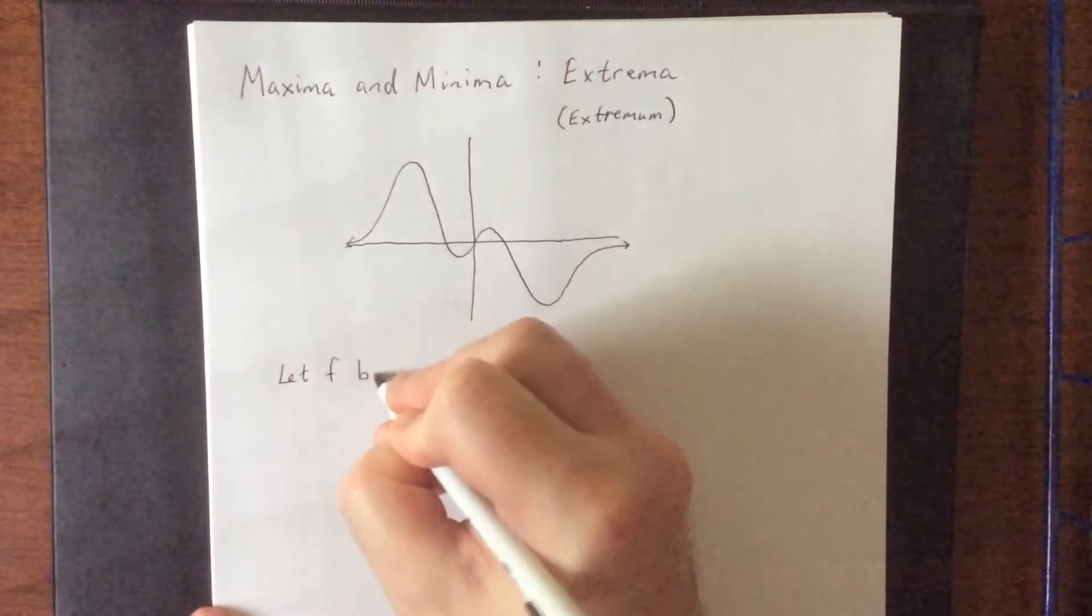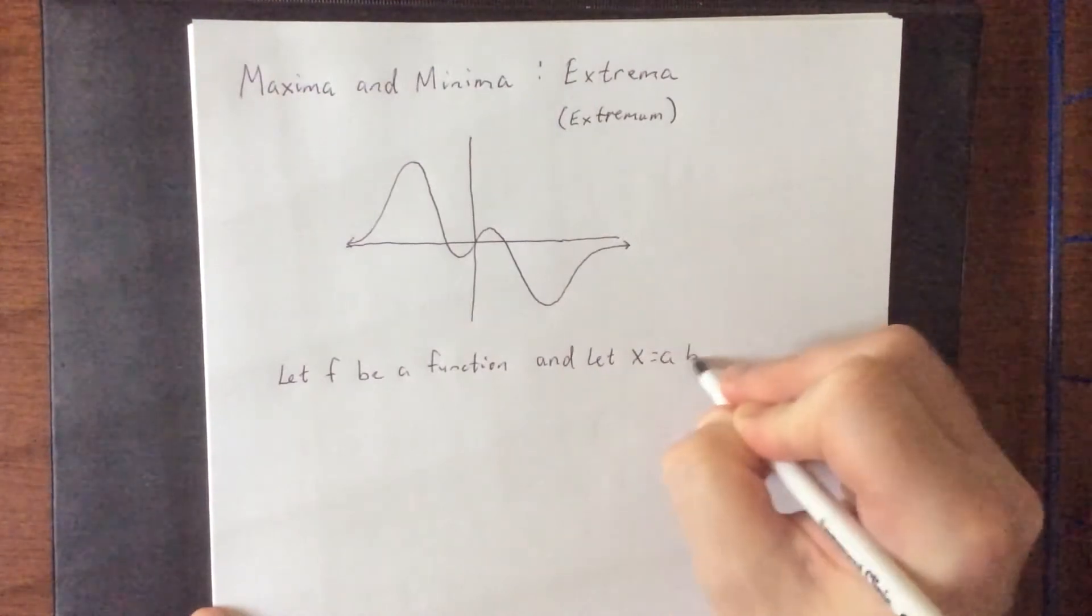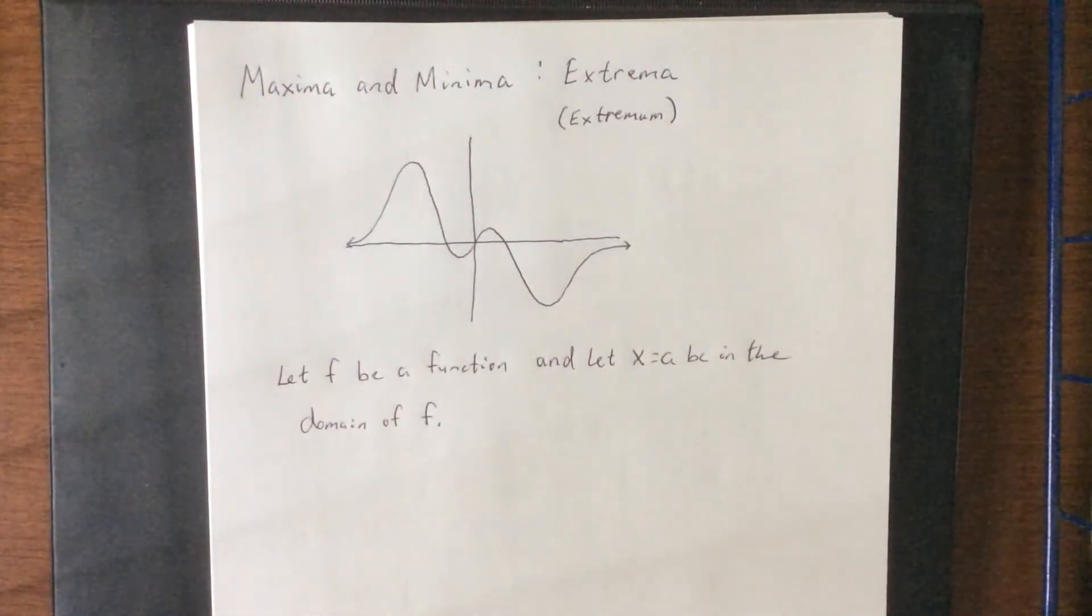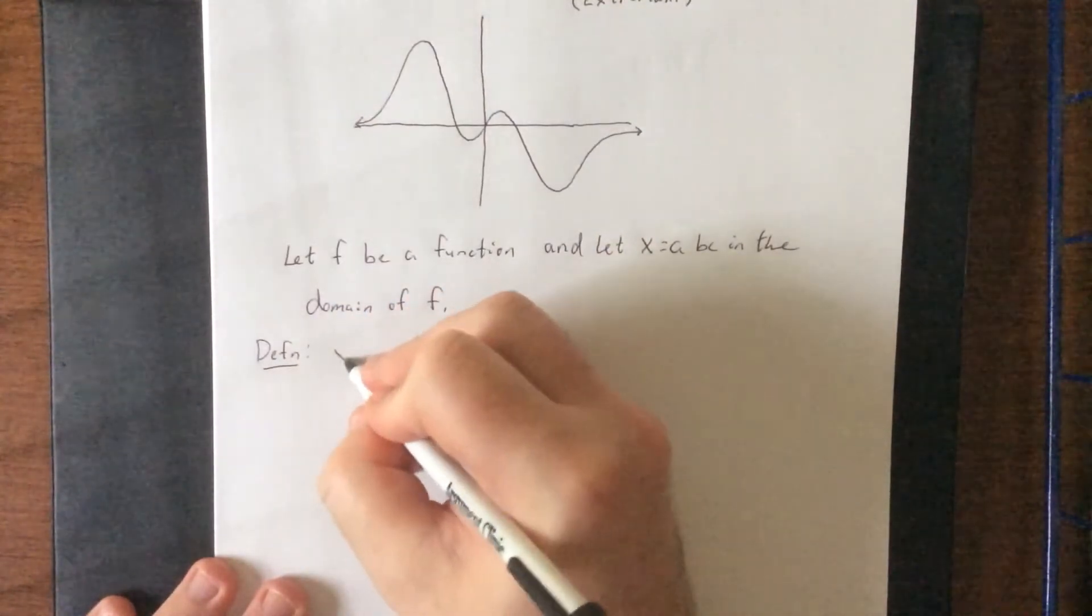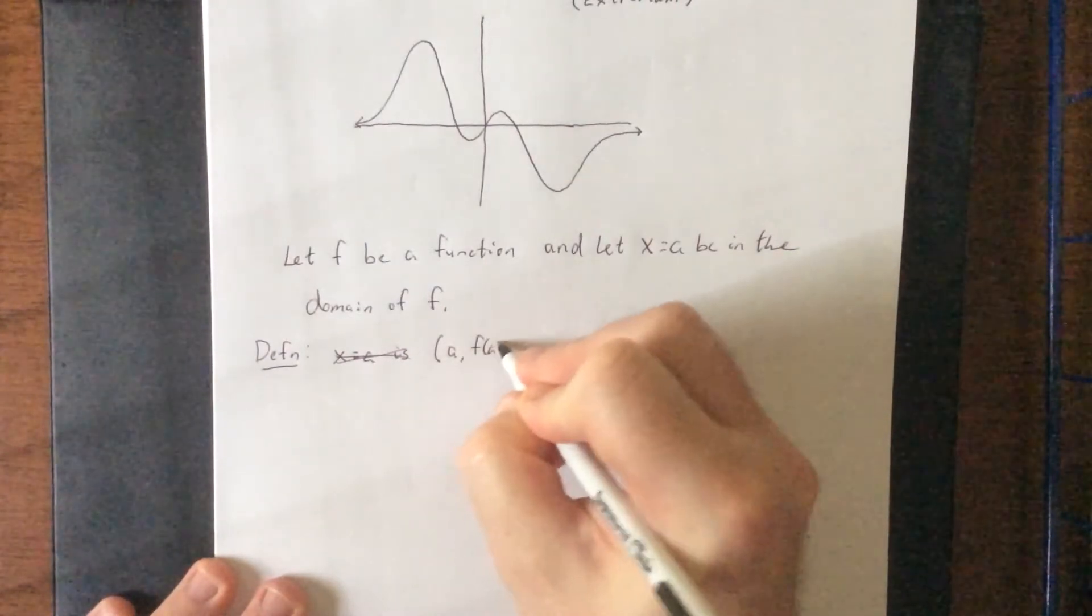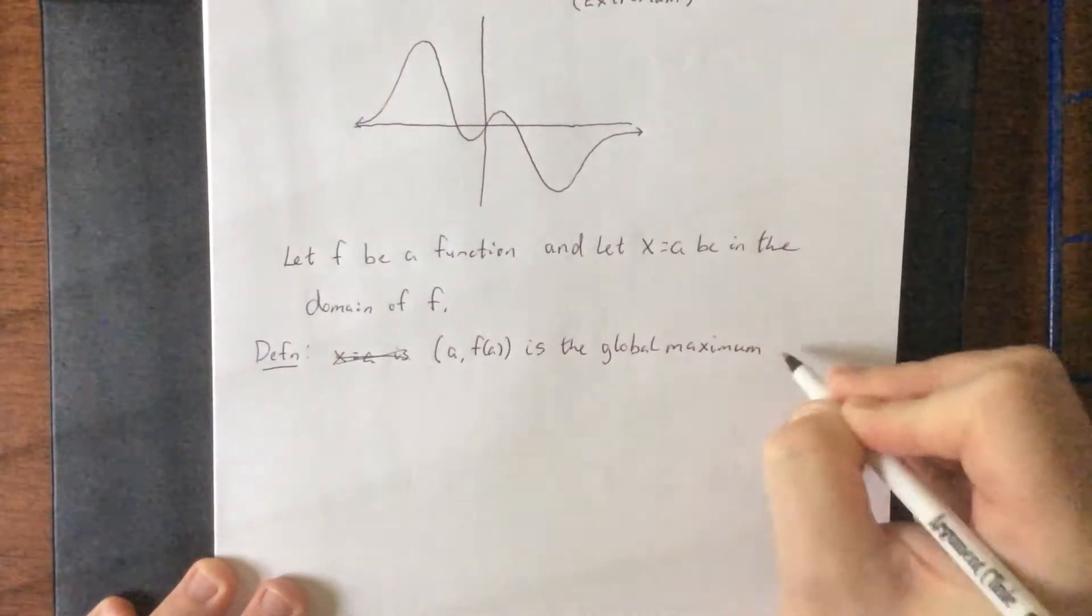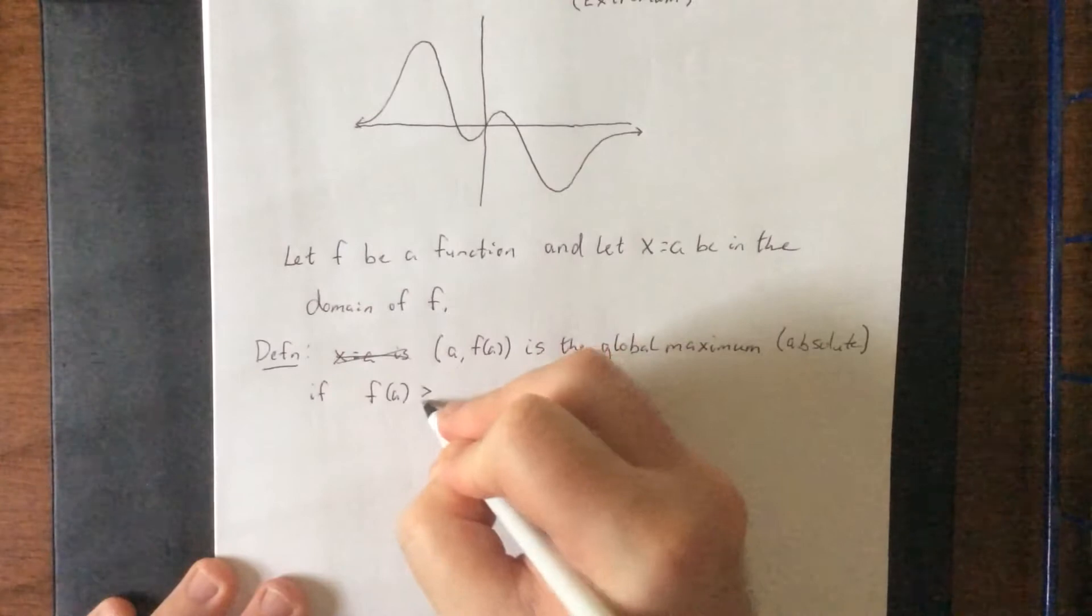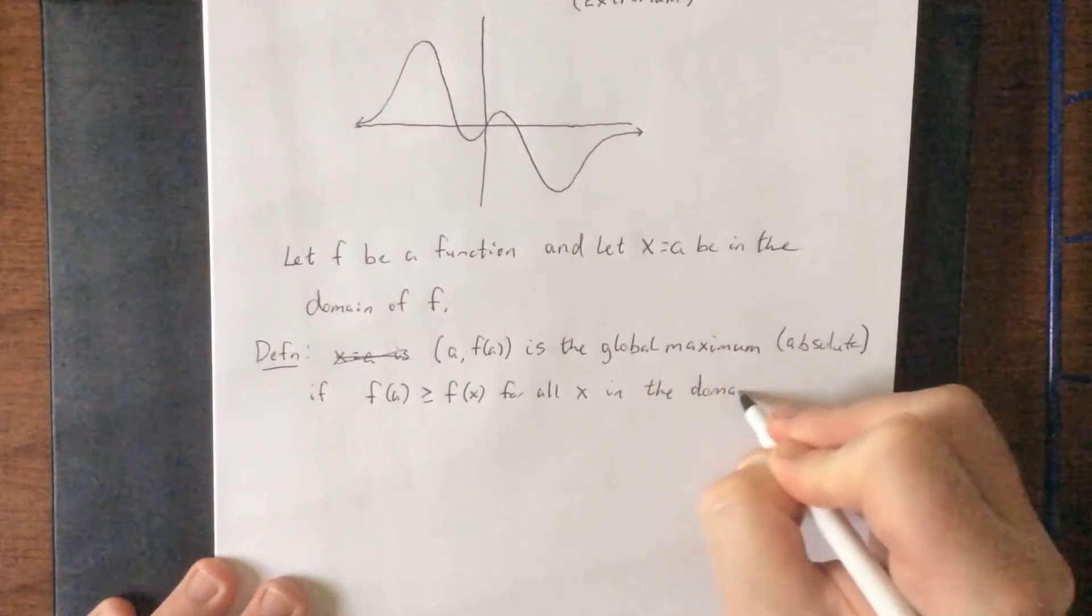So let f be a function and let x equals a in the domain of f. So first we're gonna go for the global or absolute x equals a. Actually let's make it a point. So a comma f of a is the global maximum. Global maximum is also known as absolute maximum. If f of a is greater than or equal to f of x for all x in the domain of f.